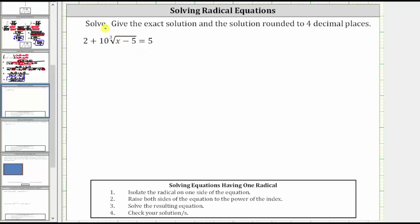Let's first isolate the radical term by subtracting two on both sides. Simplifying, two minus two is zero, and therefore the equation is now 10 times the cube root of the quantity x minus five equals five minus two, which is equal to three.